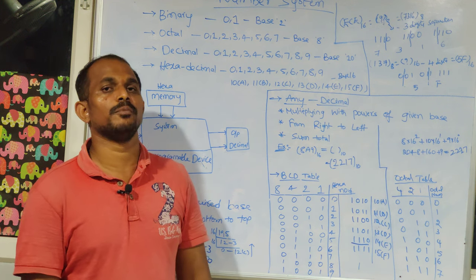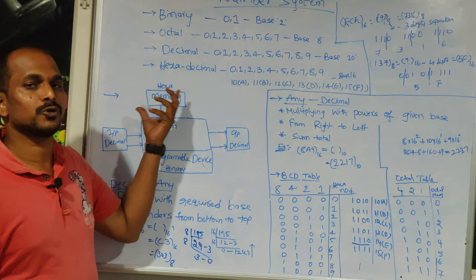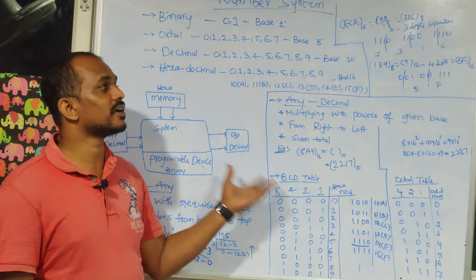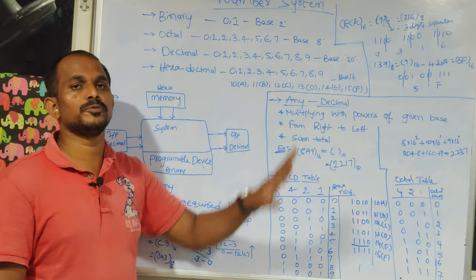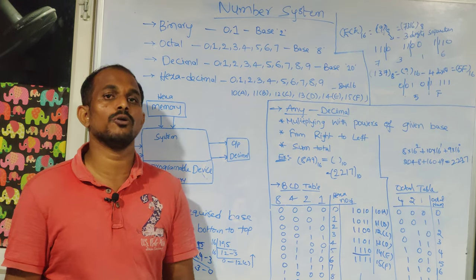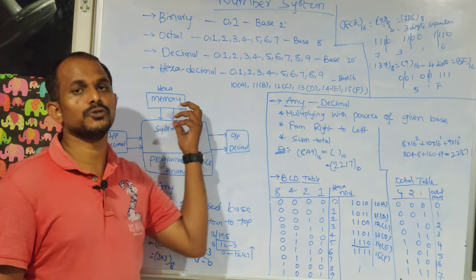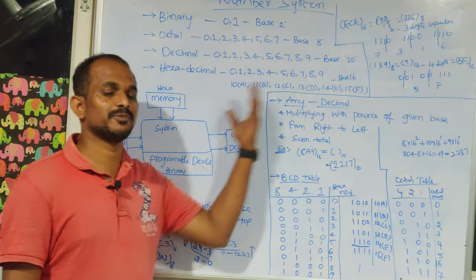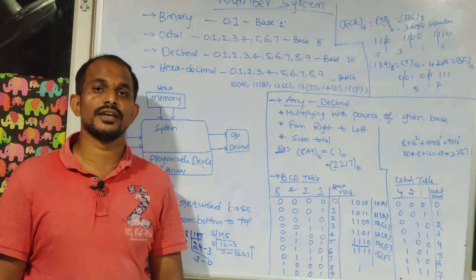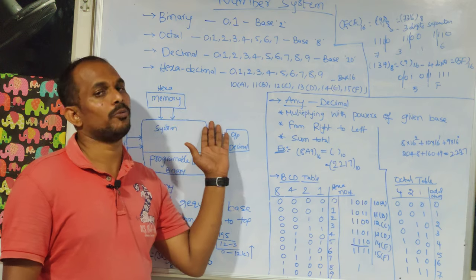The overall importance of the number system is clear: you should know the processing format of your input, the storage format of your data, and the input and output formats. This understanding is essential while processing data — for example, when performing logical operations on inputs and expecting a particular bit value of 1 or 0, you need to know BCD, octal, binary, decimal, and hexadecimal. A system programmer must be aware of all four number systems for logical operations.